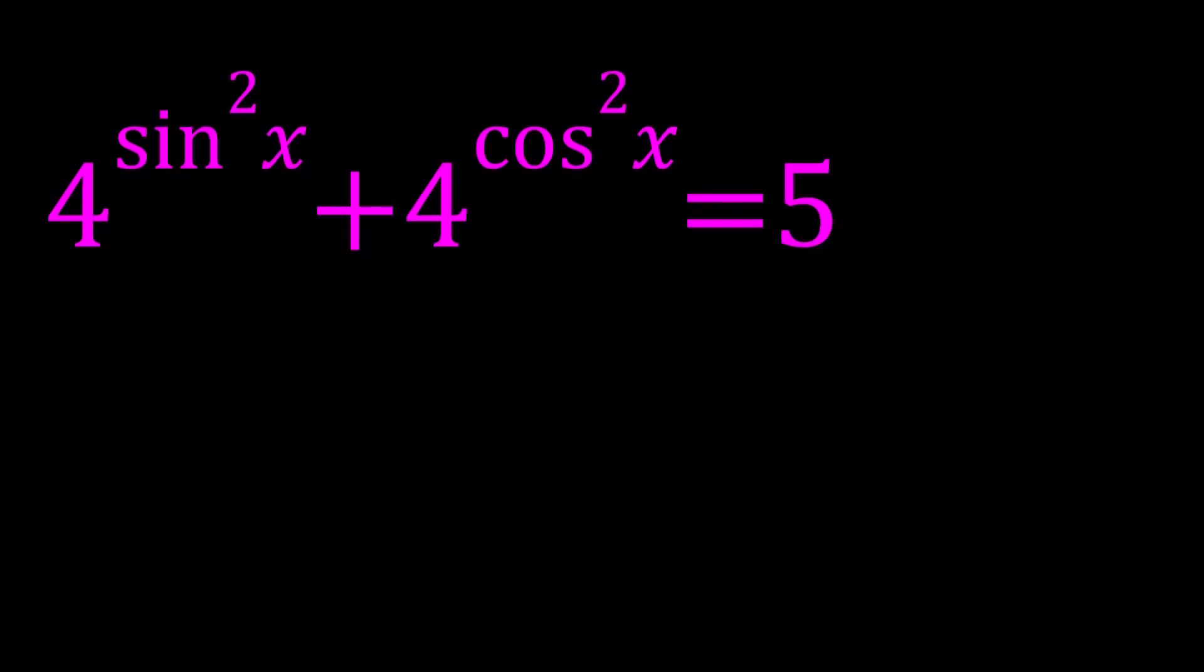Hello everyone. In this video we're going to be solving a nice exponential trigonometric equation. We have 4 to the power sine squared x plus 4 to the power cosine squared x equals 5. And we're going to be solving for the x values. We're also going to be looking at a graph at the end. So let's get started.